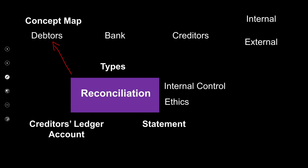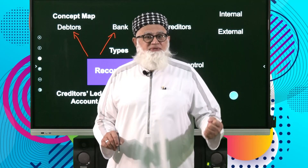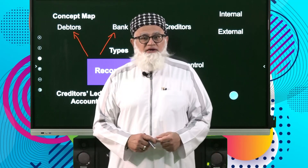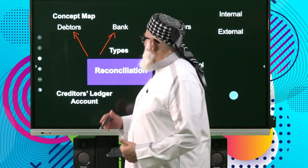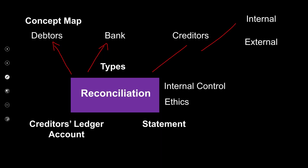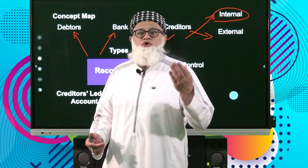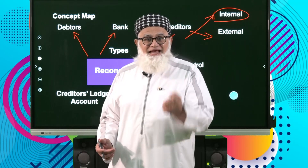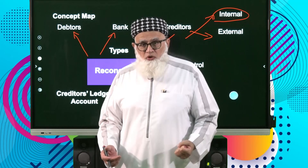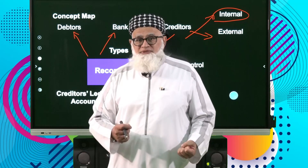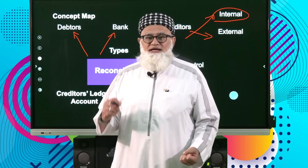Then we have the bank reconciliation — reconciling our bank account as it appears in our ledger with the statement we receive from the bank. Third, creditors' reconciliation. There are two types: one internal, where you reconcile your creditor's control account with your creditor's list, and one very important external reconciliation, where you reconcile your creditor's ledger account as it appears in our books with the statement we receive from our creditor.